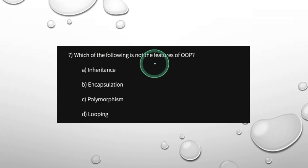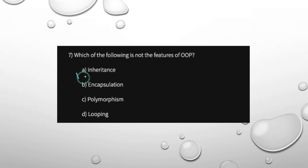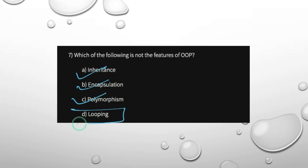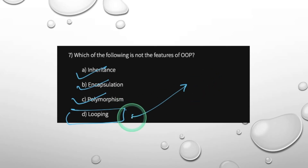Which of the following is not a feature of OOP? The features of OOP are: Inheritance, Encapsulation, Polymorphism, and Abstraction. Looping is not a feature of OOP.